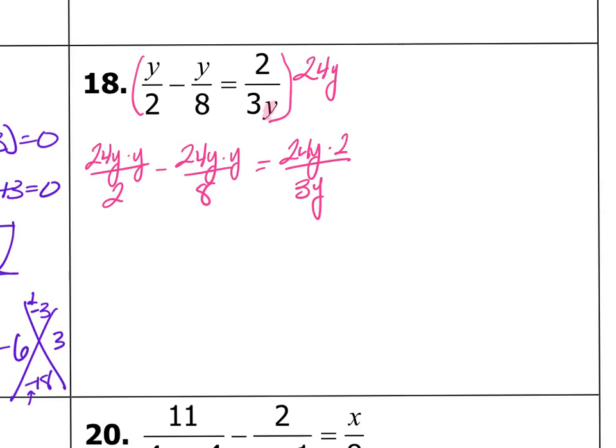Okay, now let's simplify my denominators and get rid of them. So 2 goes into 2 once and into 24 twelve times. 8 goes into 8 one time and into 24 three times. And 3 goes into 24 eight times. And then the y's make a 1. And then let's see what we have left. So I've got 12y squared minus 3y squared equals 8 times 2, 16. Is that correct? I think that is correct. Okay, I think that's good.